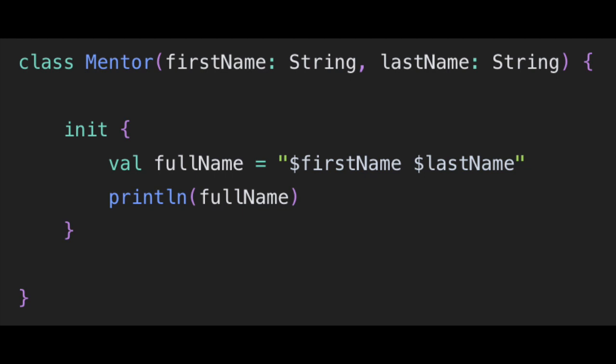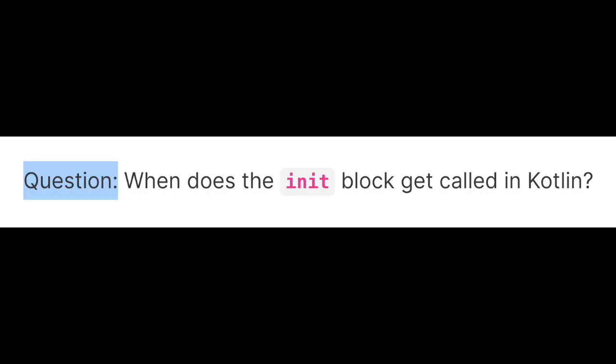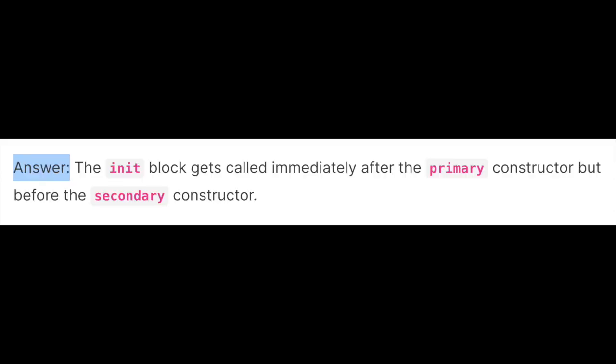We can notice that we are able to write code inside the init block to do something during initialization. The next question is: when does the init block get called in Kotlin? The answer is the init block gets called immediately after the primary constructor but before the secondary constructor.